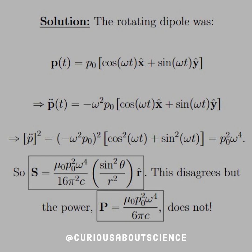The rotating dipole was given as P of T equals P naught cosine(omega T) x-hat plus sine(omega T) y-hat. Taking the derivative twice, we get a negative sign from the trig function derivatives, and also an omega squared from the chain rule each derivative. We get back to the original form, so P double-dot of T equals negative omega squared times the original dipole P.